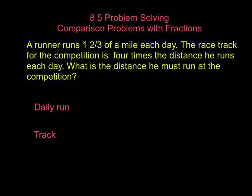Now our first thing that we're going to do is we're going to underline our information. So our first thing it tells us is that he runs one and two-thirds of a mile each day. So that would be his daily run. His daily run here is going to be one and two-thirds.